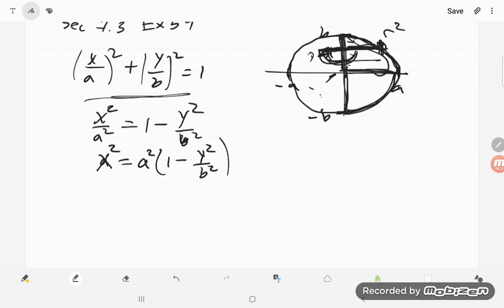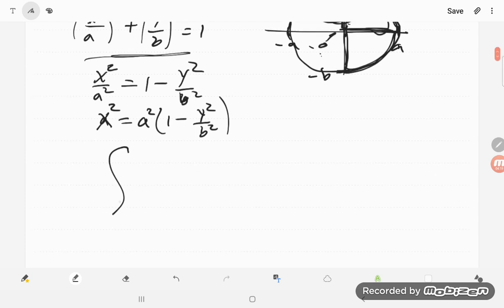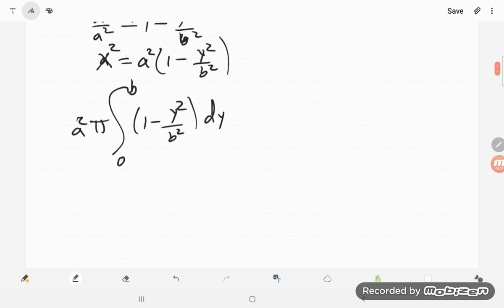My disks are going to go from 0 to b. I have pi r squared, so I'll bring out the a squared, 1 minus y squared over b squared, like that, dy. So that should do it for me.